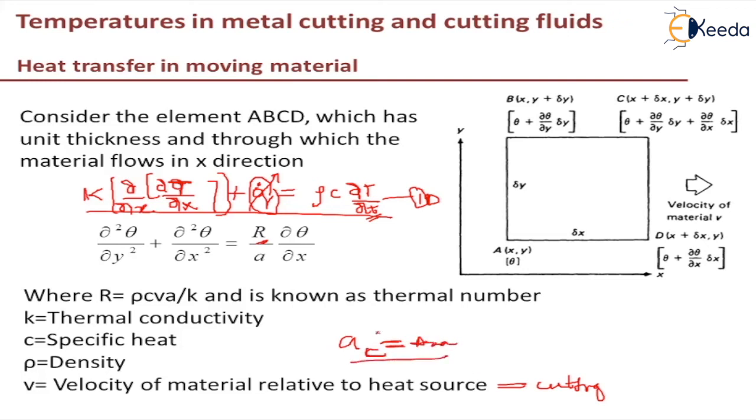This is the general heat conduction equation for metal cutting, assuming this unit area ABCD. Once we solve this equation we will end up with the solution. Before solving, if you take it as 2D it will be difficult, so let us assume it as 1D then solve it.